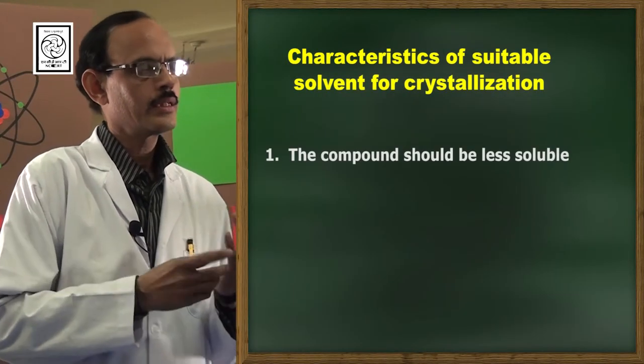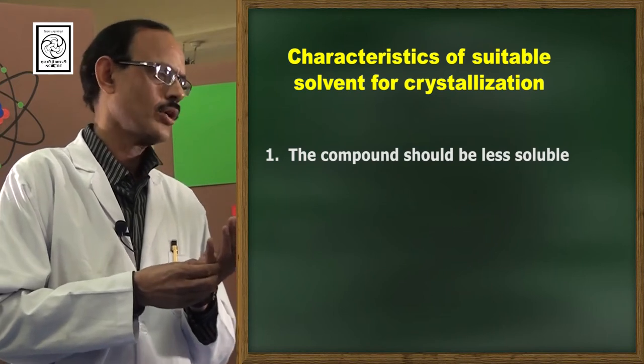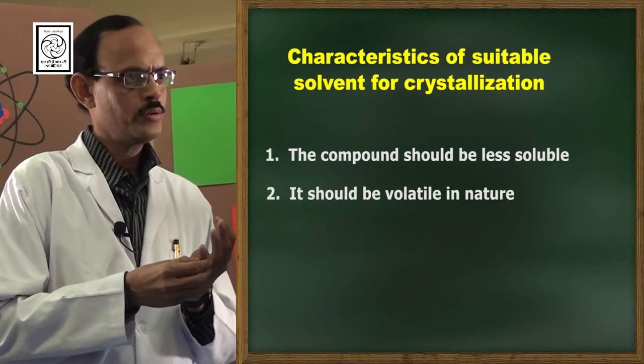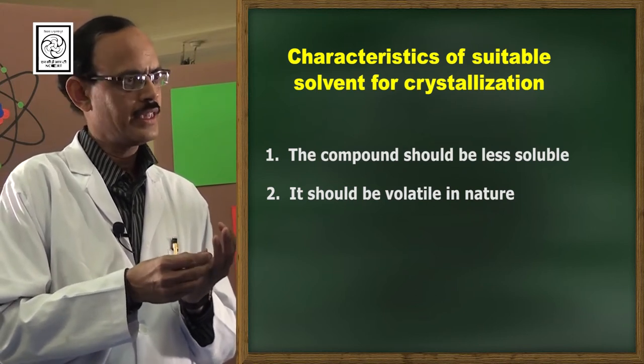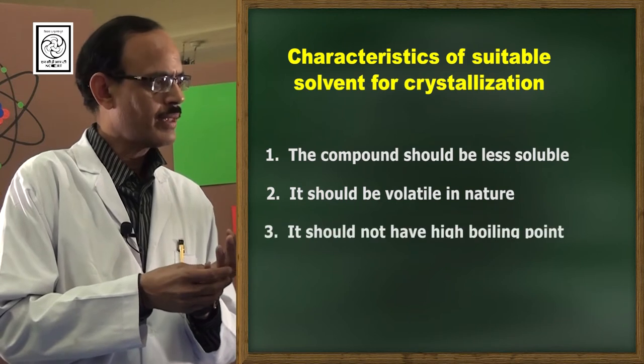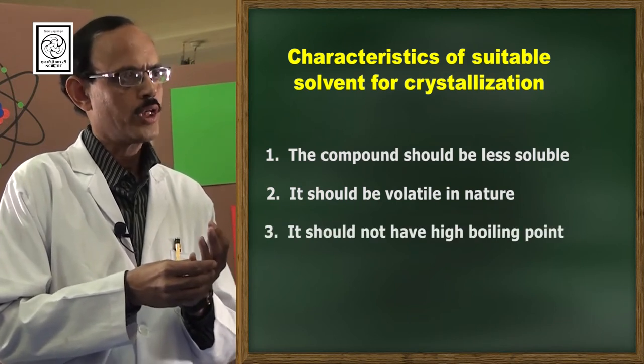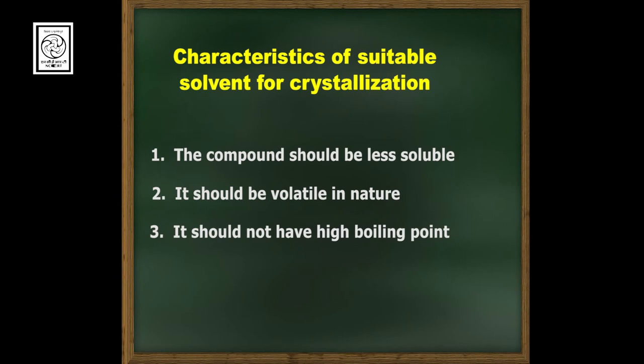Do you know some properties of suitable solvent for crystallization? Yes sir, it should not have high boiling point, it should be volatile in nature, and the solute should be less soluble in the solvent. Okay, number one, the solute should be less soluble in solvent; number two, the volatility of the solvent should be more because it can be easily concentrated; and number three, the boiling point of solvent should be less. These are the three main characteristics of suitable solvent for crystallization.